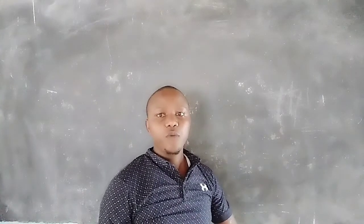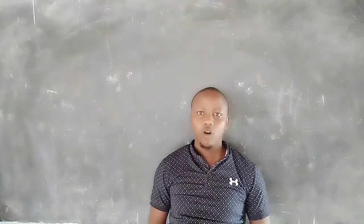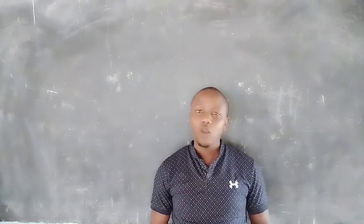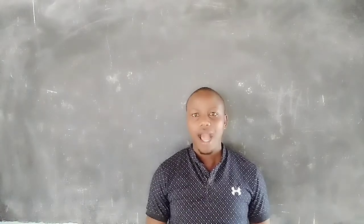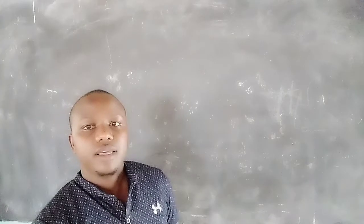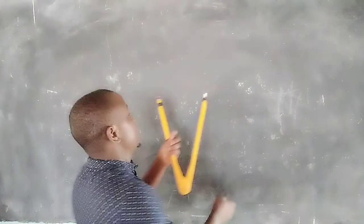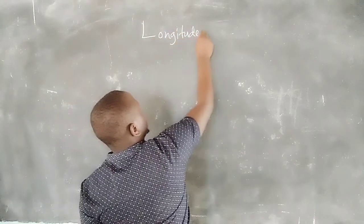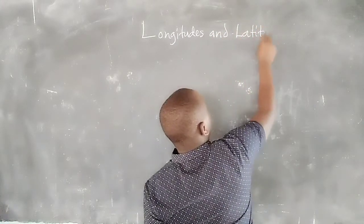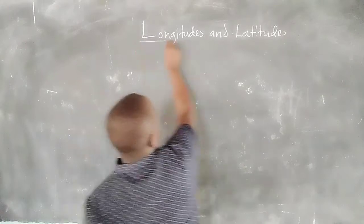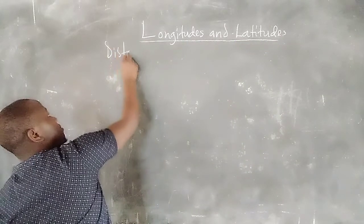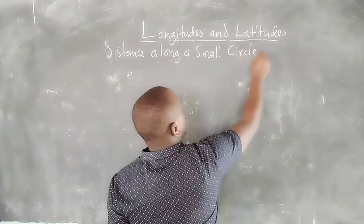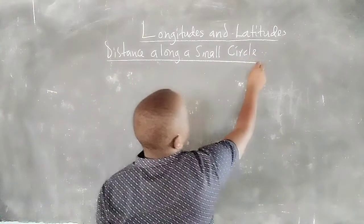Welcome. We are doing a second lesson on longitudes and latitudes. In this case, I want to teach the distance between two places along a latitude. We are going to see the formula we follow to get the distance between places along the same latitude. The topic is longitudes and latitudes, and in this case we are taking distance along a small circle. Small circles are parallel latitudes.